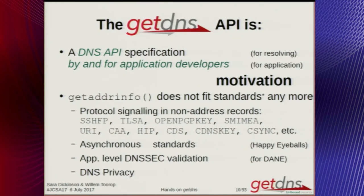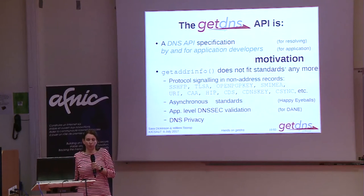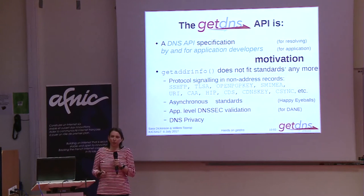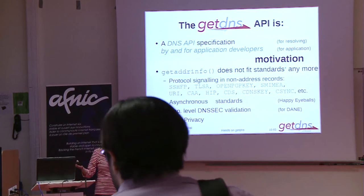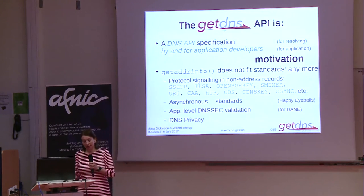What we wanted to do was start by setting the scene for where the GetDNS API came from. It tries to define itself with one sentence by saying that it is an API written by and for application developers. This is different from a lot of DNS APIs. With all the recent evolution in the DNS protocol, getaddrinfo really just can't cope with the new standards available. There is so much more in DNS now than just name lookups — there's a whole range of DANE-related records, protocol signaling, and much more that can't be signaled up to applications through the traditional API. Additionally, a huge number of applications now really need asynchronous lookups, and getaddrinfo can't deliver that either. There are new standards around doing Happy Eyeballs, fetching IPv6 first, so you need an asynchronous API to deliver that.